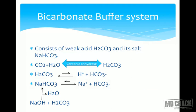The bicarbonate buffer system consists of H2CO3 and its salt NaHCO3. H2CO3 is formed by the combination of CO2 and H2O — a reversible reaction. H2CO3 dissociates into H+ and HCO3-, though more remains in combined form. The salt NaHCO3 dissociates into Na+ and HCO3-. If a strong acid (H+) is added, it combines with HCO3- and is converted into H2CO3, a weak acid.